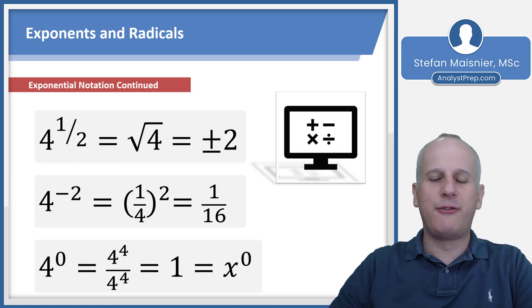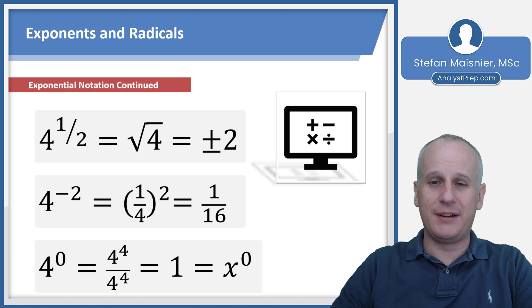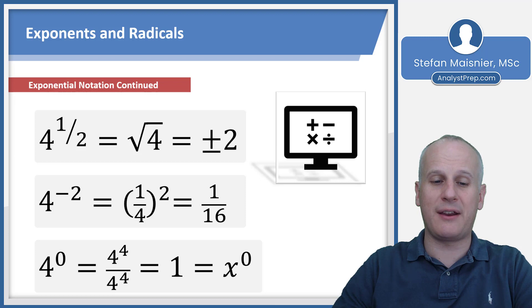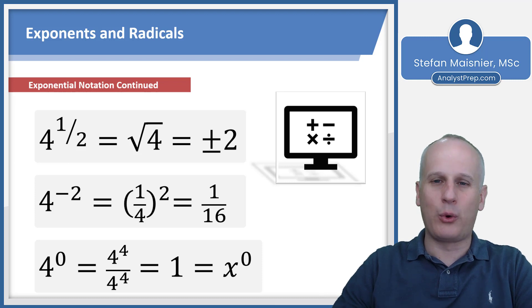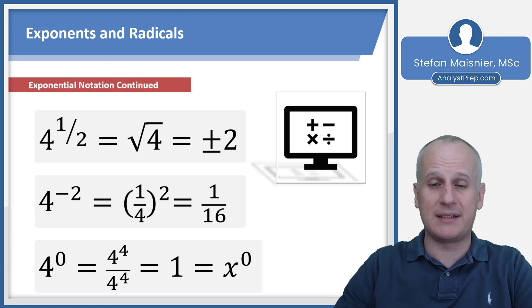4 to the 0 power is technically 1. The proof: when you divide bases, you subtract exponents. If we had 4 to the 4th divided by 4 to the 4th, anything divided by itself is 1. That gives us 4 minus 4, or 0 fours, leaving behind the 1. Any value raised to the 0 power is 1 because it's technically something divided by itself, and any quotient of a number divided by itself is always 1.